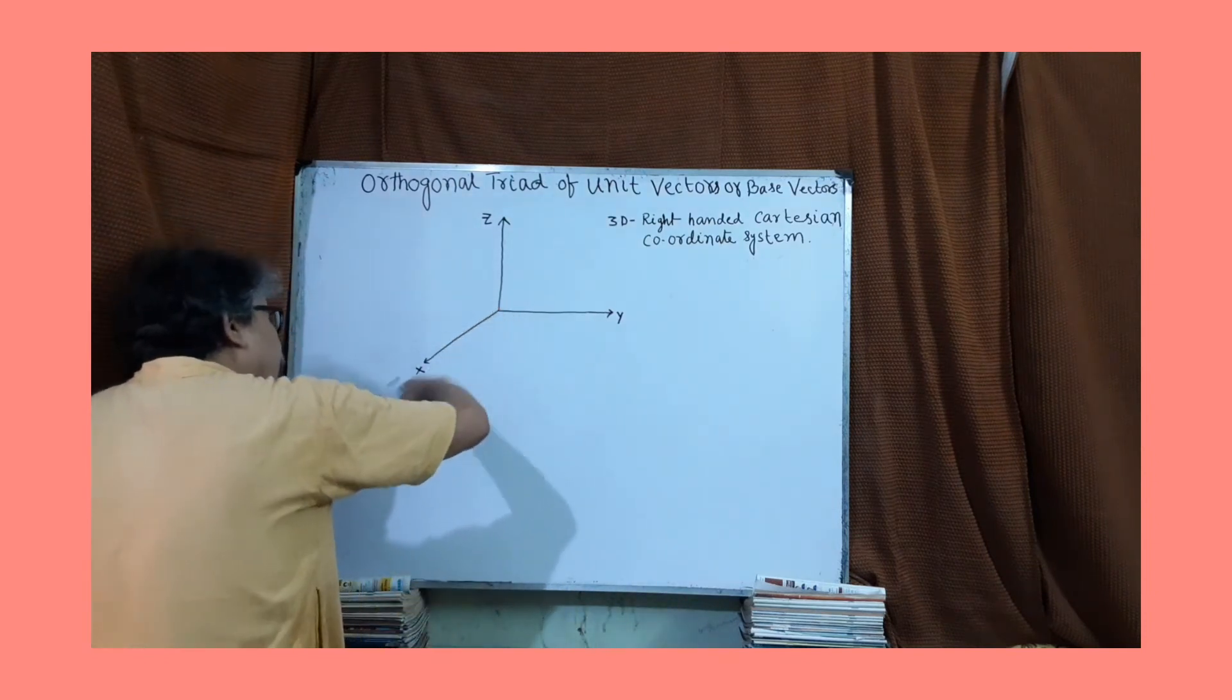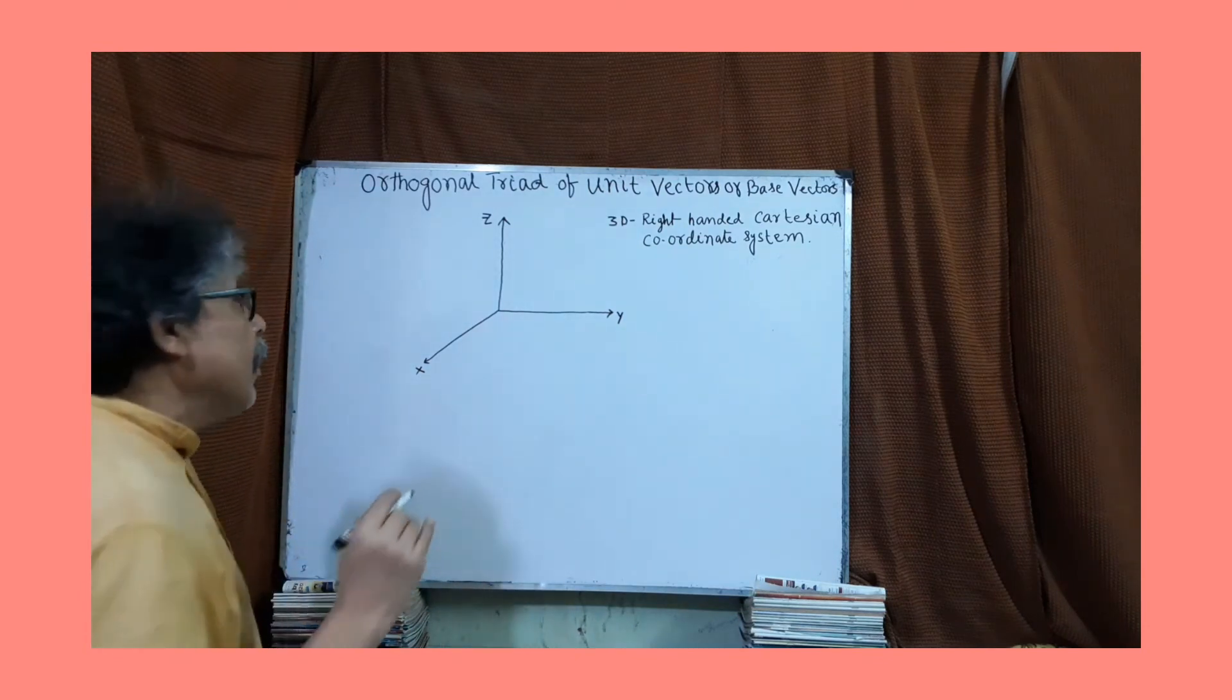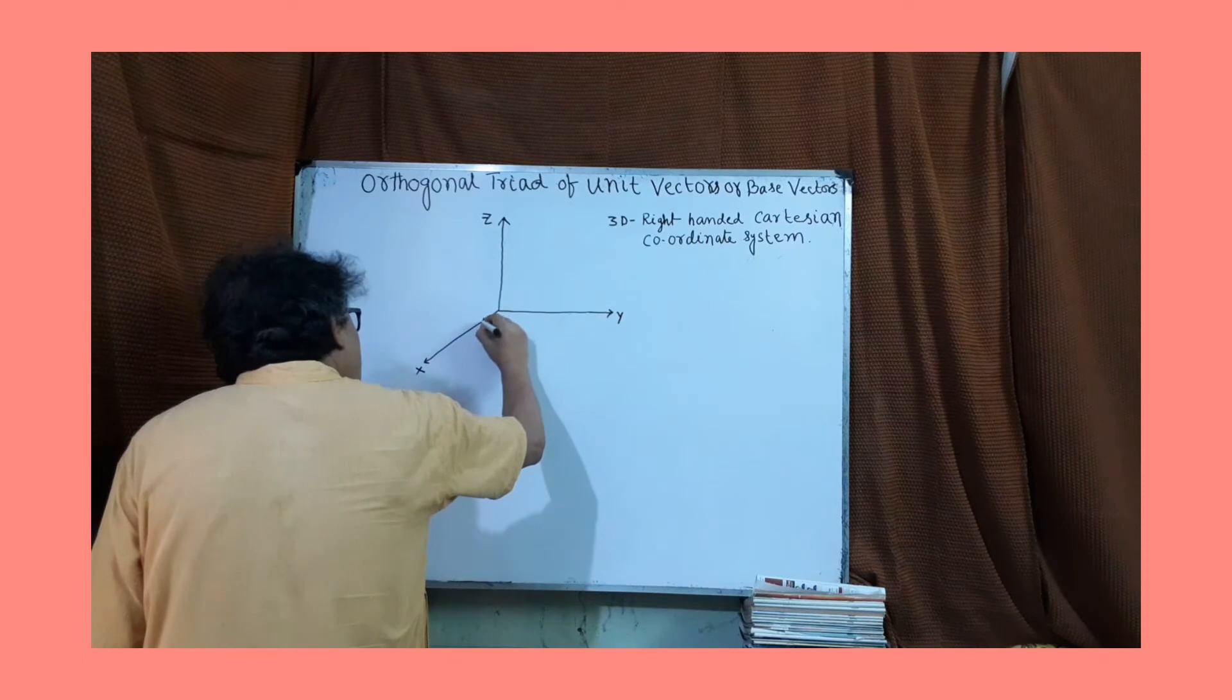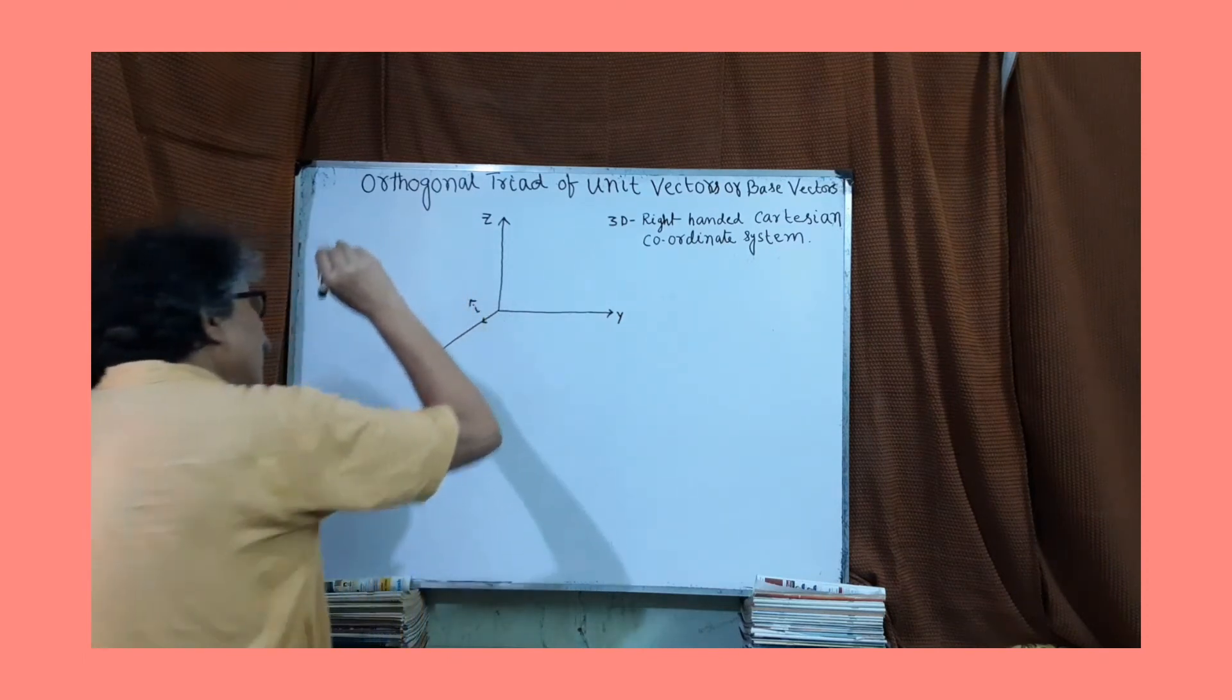Now along this x-axis, we choose a unit vector. And it is always denoted by i-cap.